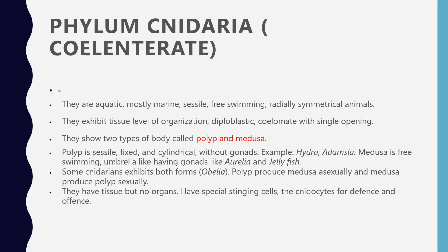They are diploblastic and have a single opening in their body. An important feature is that they show two types of body forms: polyp and medusa. Polyp is sessile and fixed — cylindrical in shape, like Hydra or Adamsia. Medusa is umbrella-like and free-swimming.